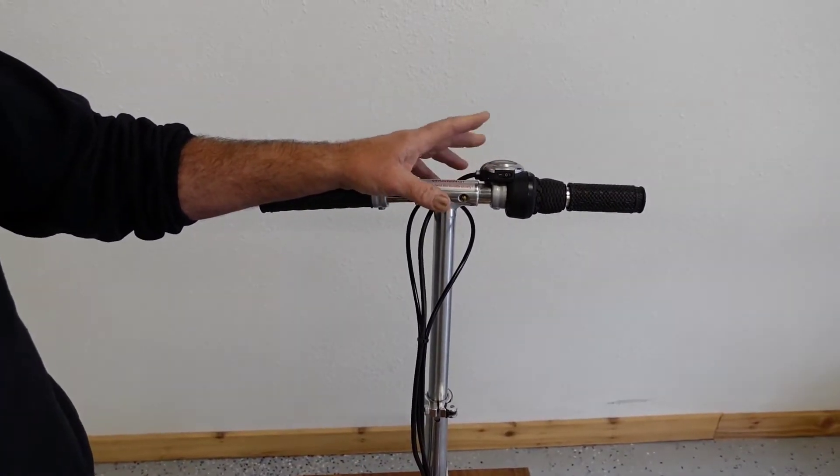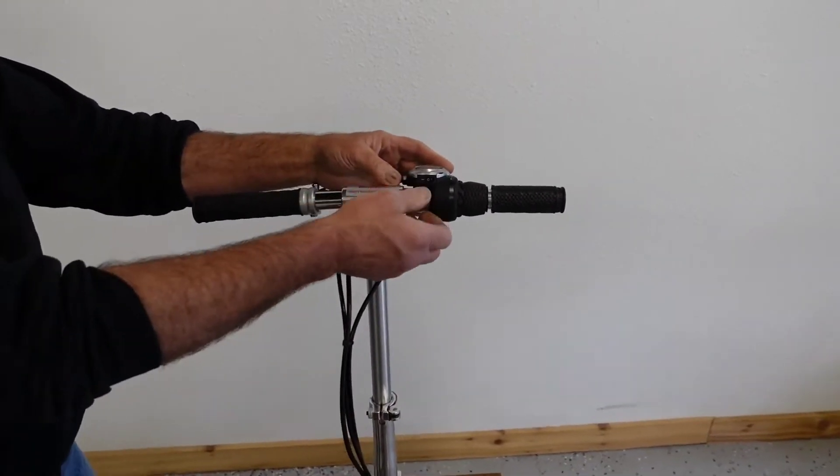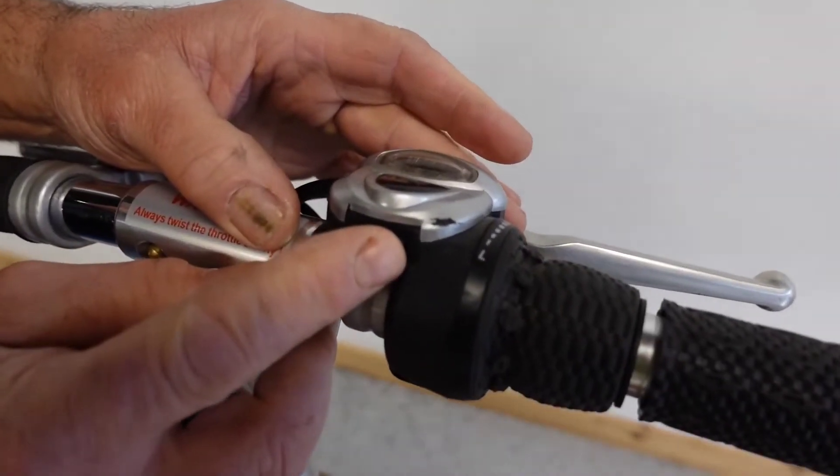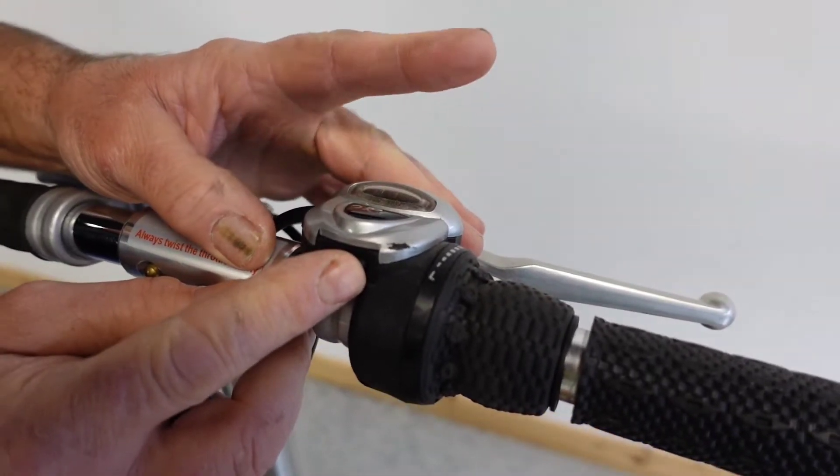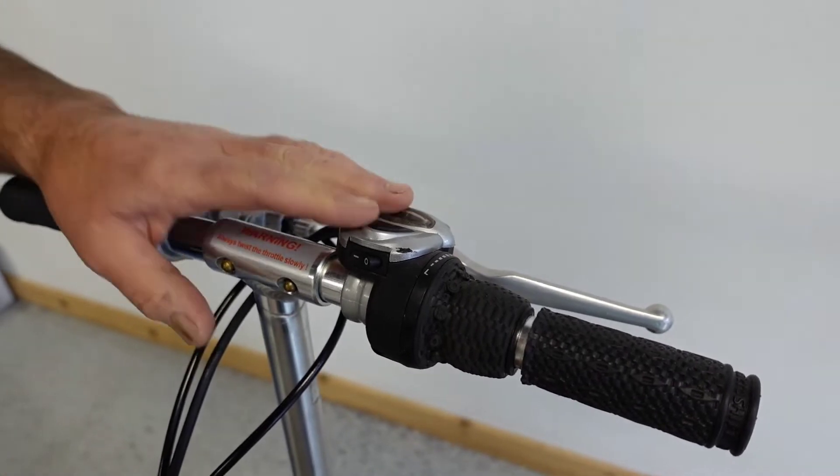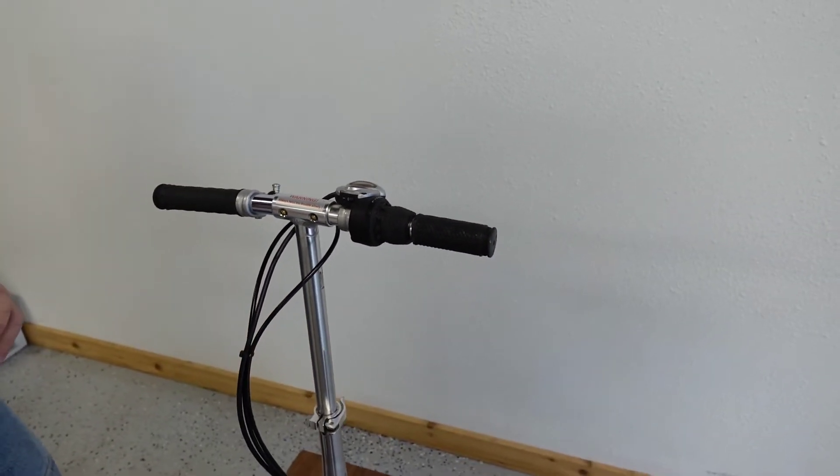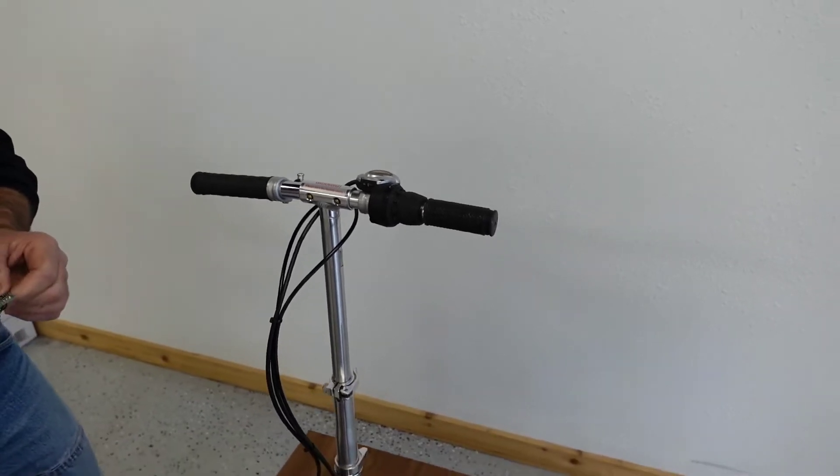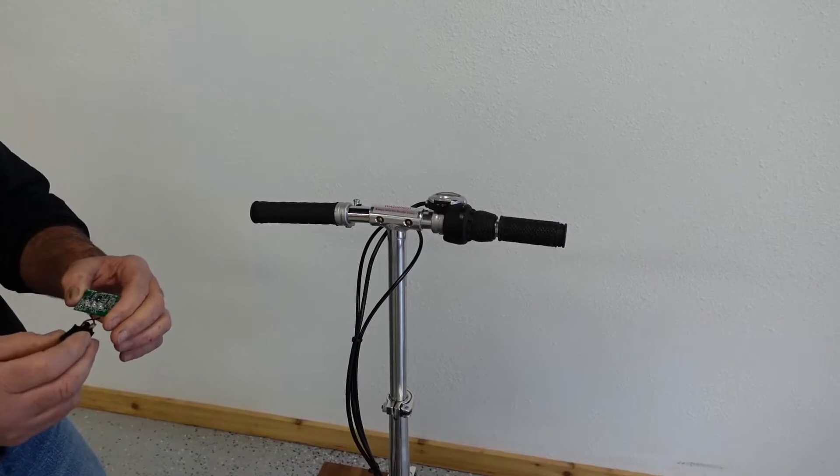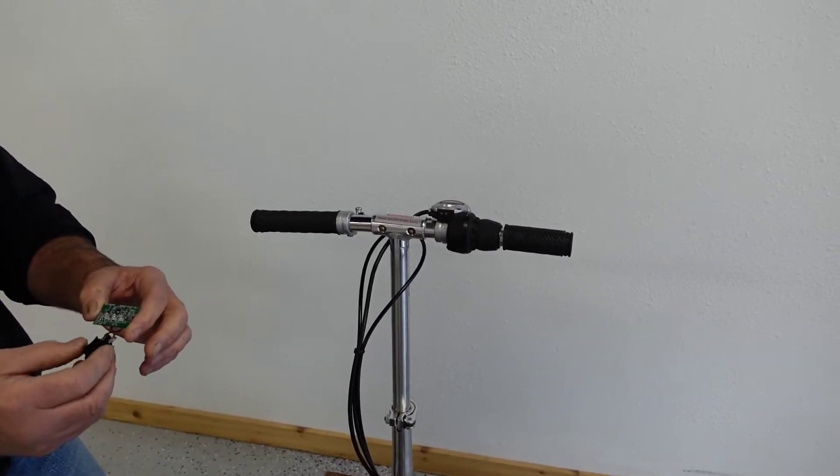This is our original version of the TravelScoot with the throttle assembly with the lateral on-off switch. As these throttle assemblies become less available, we are going to continue to support this by offering the component that may wear out or fail, namely the circuit board and on-off switch as a complete assembly.